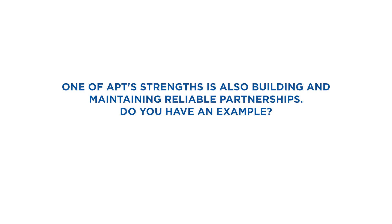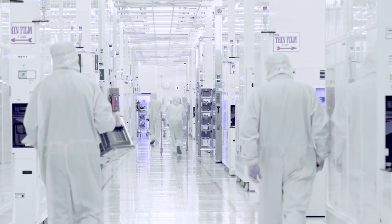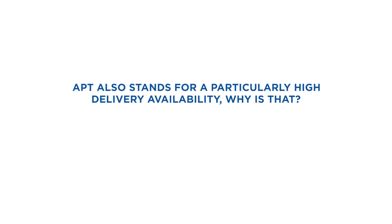What comes to mind spontaneously is the alliance — the Teflon alliance, so to speak — with the company Chemours, formerly DuPont. It is one of our most important raw material suppliers, and their products enable us as APT solution providers to develop product solutions together with our customers along the supply chain, for example in our key addressed markets such as semiconductors or biopharmaceuticals.